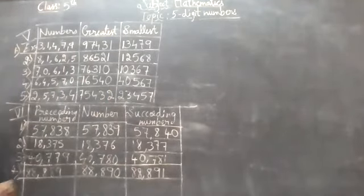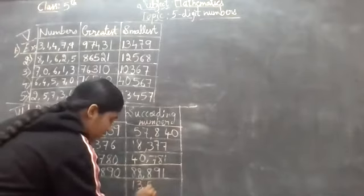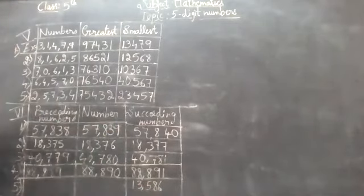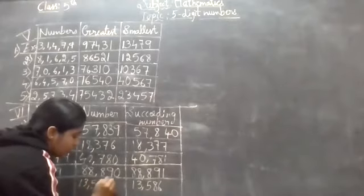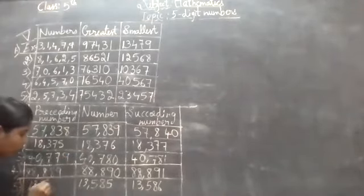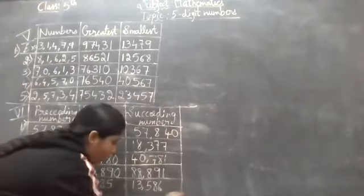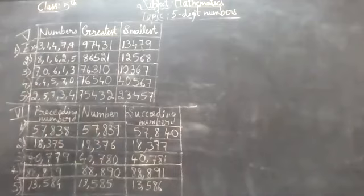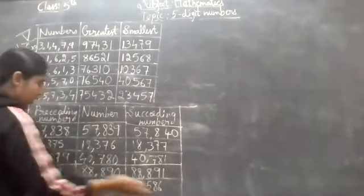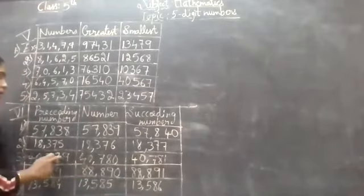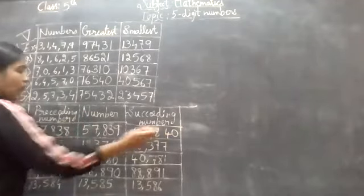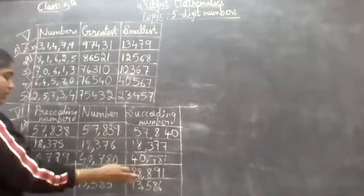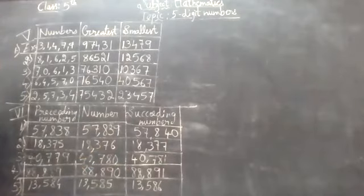Let us move on to the fifth one. They have given the succeeding number: 13,586. What is before 86? That is 85, so the number is 13,585. Before 85? That is 84, so 13,584. So we wrote all the numbers properly: 84, 85, 86; and 89, 90, 91; and 79, 80, 81; and 75, 76, 77; and 38, 39, 40. Only the ones and tens places are changed.